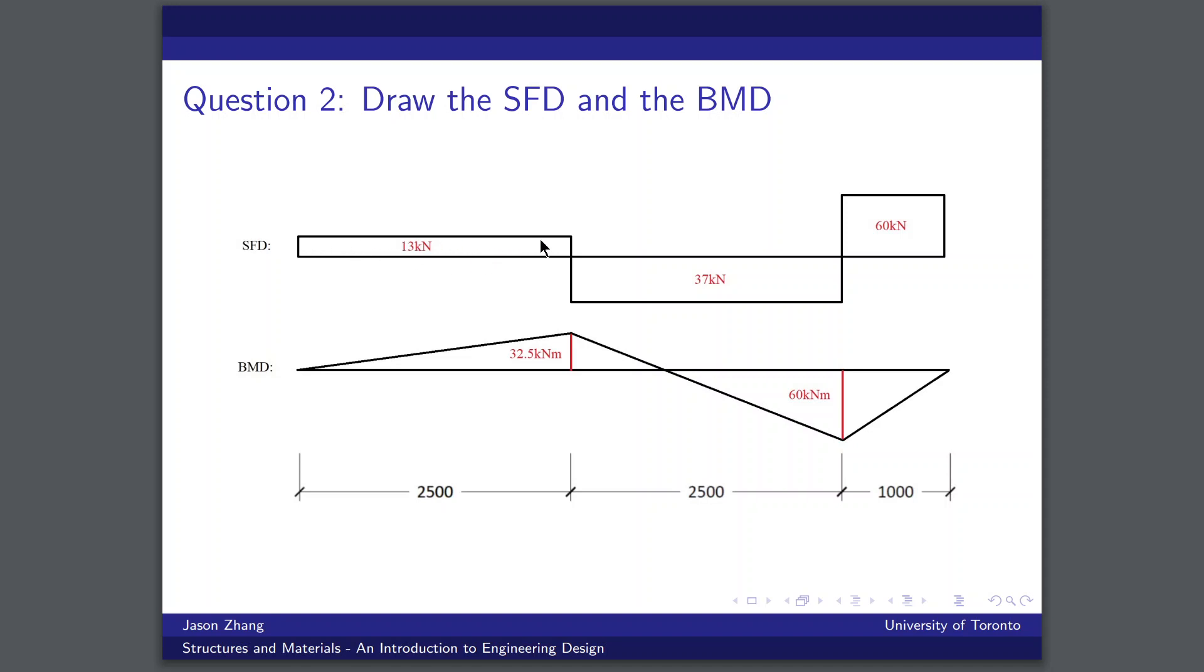So by calculating the area of this rectangle, we find that this local maximum in the bending moment is equal to 32.5 kilonewtons meters. And similarly, by taking the area under this block in the shear force diagram, we find that this local maximum for the bending moment is 60 kilonewtons meters, or I should say a local minimum.